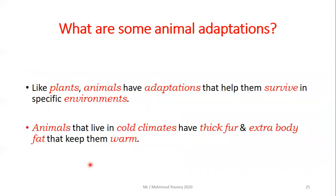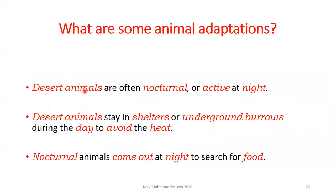Then we move to animal adaptations. Like plants, animals have adaptations that help them survive in specific environments. Some animals that live in cold climates have thick fur and extra body fat to keep them warm. Desert animals are often nocturnal, meaning active at night. They stay in shelters or underground burrows during the day to avoid the heat, then come out at night to search for food.